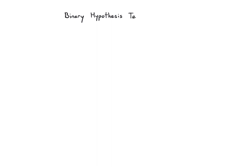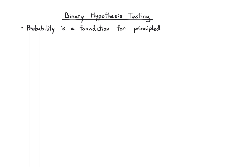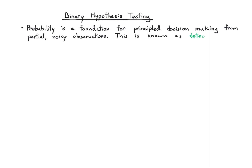Let's talk about one of our first applications, which is binary hypothesis testing. Probability is a foundation for making principled decisions, and instead of using full information, usually we'll be faced with using partial noisy observations. In the literature, we're going to refer to this often as detection theory or hypothesis testing, and in machine learning, there's a related topic known as classification.